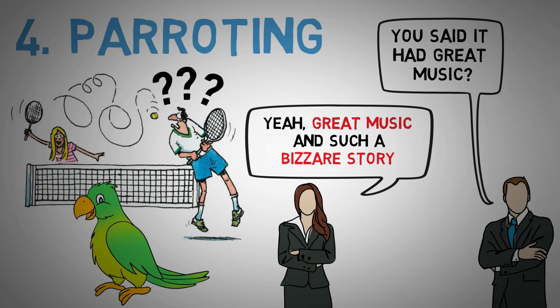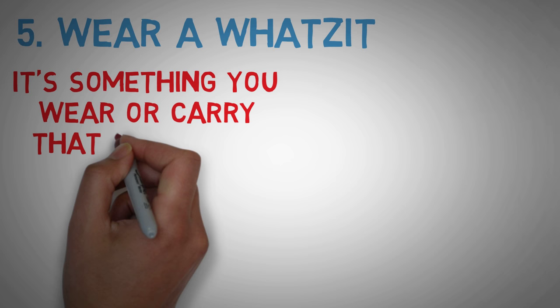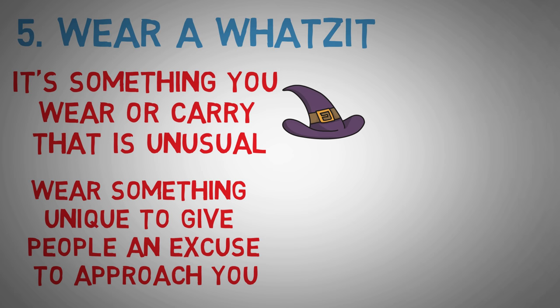Technique number five, wear a whatsit. Starting a conversation with someone you don't know yet can be hard. A whatsit can help you solve that problem. What is a whatsit? It's something you wear or carry that is unusual. A strange tie, a unique pin, an interesting purse or an amusing hat. It's any object that draws people's attention. So whenever you go to a gathering, wear something unique to give people an excuse to approach you.